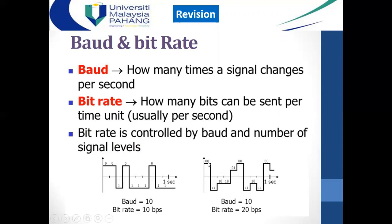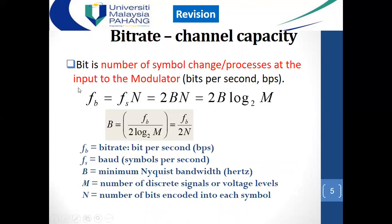Whereas here, two bits are used per symbol. Two to the power two means four-level PCM. For each symbol there are two bits, so baud rate is still 10 — there are 10 components of the symbol — while bit rate is 20 bits per second because there are two bits per baud per symbol. This gives 10 symbols per second, or baud per second.